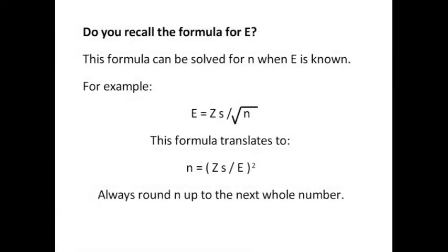Do you recall the formula for effect size? This formula can be solved for n when E is known and s is known and the confidence level is known. For example, E equals Z times s divided by the square root of n.